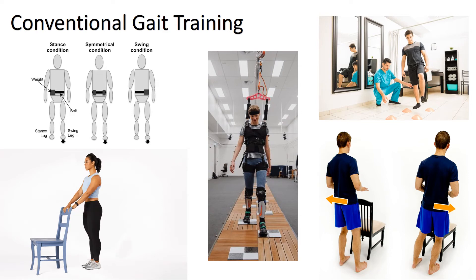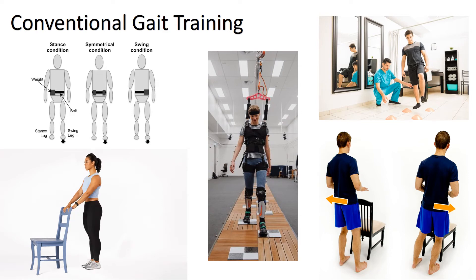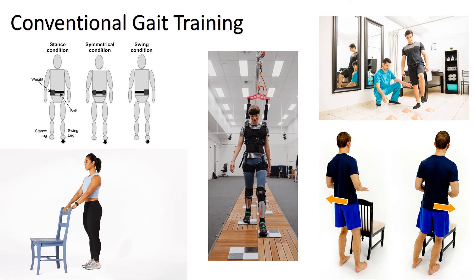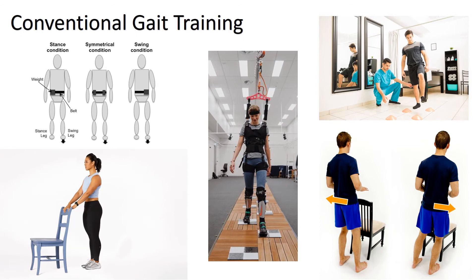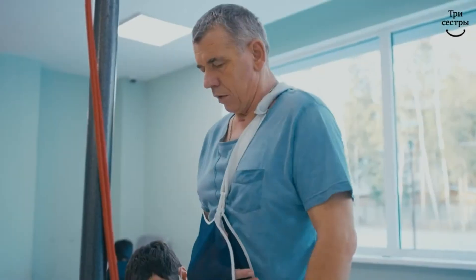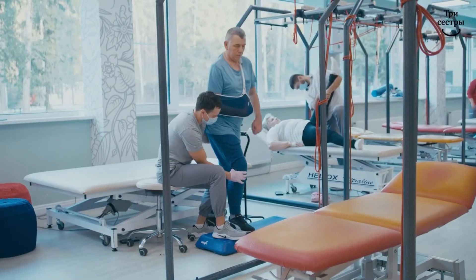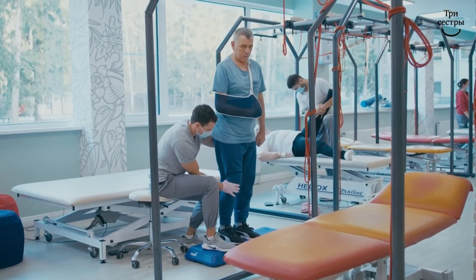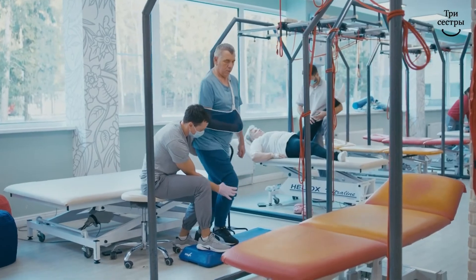This can include symmetrical weight bearing between lower limbs in stance, weight shifting between lower limbs, stepping training over level and uneven surfaces, heel strike or limb loading acceptance, single leg stance with stable balance and control, and push-off or initial swing of the moving leg.